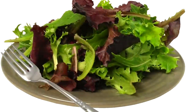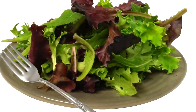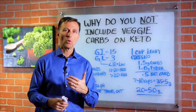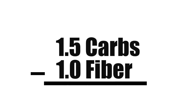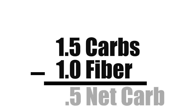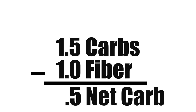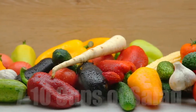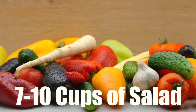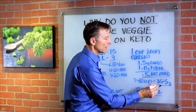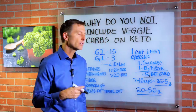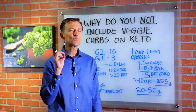Let's take, for example, one cup of salad — usually leafy greens. On average, one cup of leafy greens is 1.5 grams of carbohydrate. If we minus the fiber, which is one gram, we get 0.5 grams of net carbs. I recommend seven to ten cups of salad or vegetables per day, which would equal 3.5 to 5 grams of carbs — extremely low.